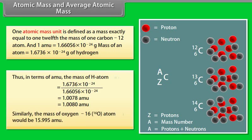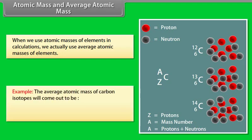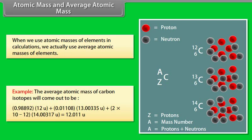Similarly, the mass of an oxygen-16 atom is 15.995 amu. When we use atomic masses of elements in calculations, we actually use average atomic masses. The average atomic mass of carbon isotopes is calculated as: (0.98892 × 12U) + (0.01108 × 13.00335U) + (2 × 10⁻¹² × 14.00317U) = 12.011U.